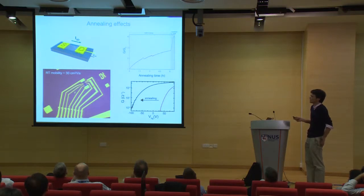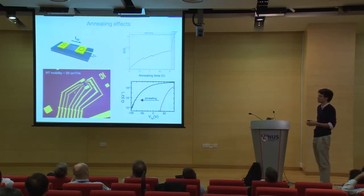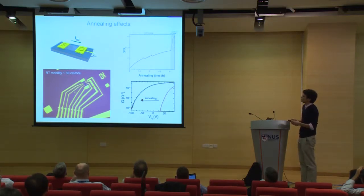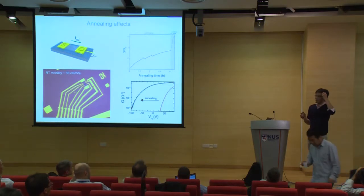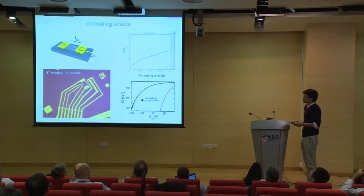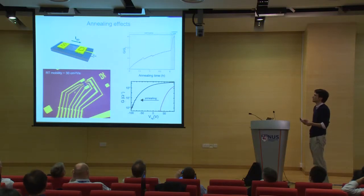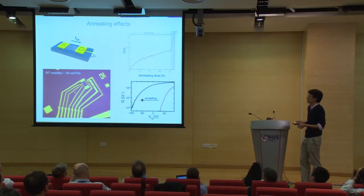We had to transfer these crystals onto a fresh substrate before doing transport, because the oxide appeared to have been compromised during growth. After transferring, etching, and contacting them, we studied the electrical properties. A typical sample showed mobility of about 30 at room temperature. The crucial step, similar to what the MIT group reported, was that if you anneal these samples in vacuum for a very long time, you improve their conductivity by quite a lot.